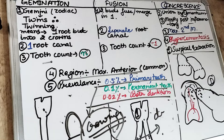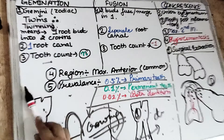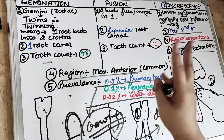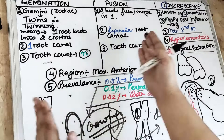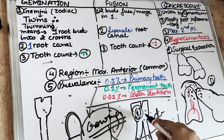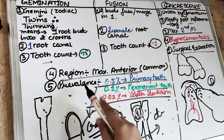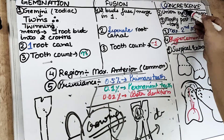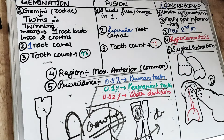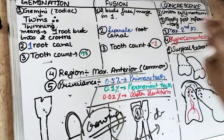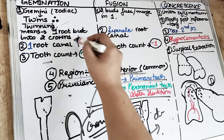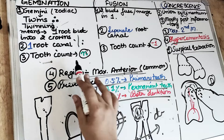To recap: gemination — always remember the zodiac sign Gemini, the twinning. One tooth splits into two, so there is going to be a single root canal most of the time and the tooth counts as one. For fusion, two teeth fuse together with separate root canals for both. If we count the fused tooth as one, there will be a shortage of one tooth. Most prevalence is seen in primary teeth and most commonly in the maxillary anterior region. The five points for gemination are: twinning, one root into two crowns, one root canal, normal tooth count, and region/prevalence.